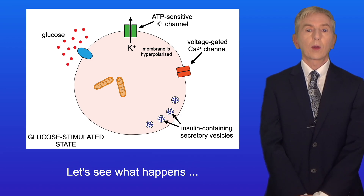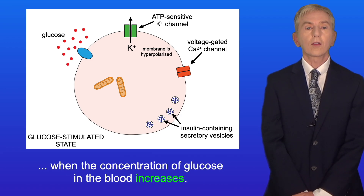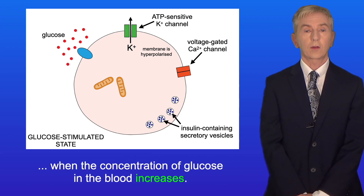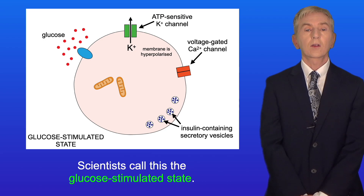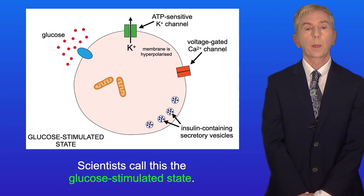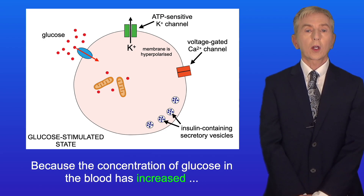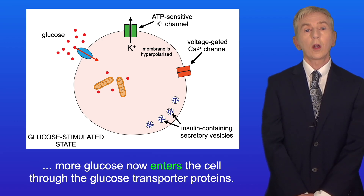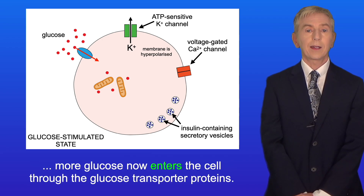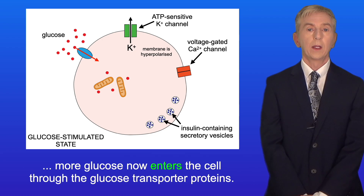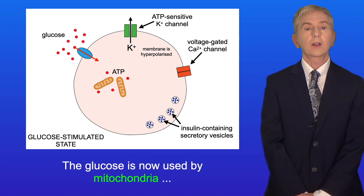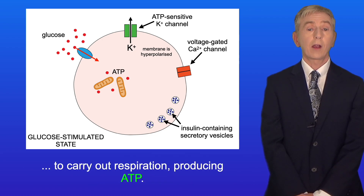Now let's see what happens when the concentration of glucose in the blood increases — scientists call this the glucose-stimulated state. Because the concentration of glucose in the blood has increased, more glucose now enters the cell through the glucose transporter proteins. The glucose is then used by mitochondria to carry out respiration, producing ATP.